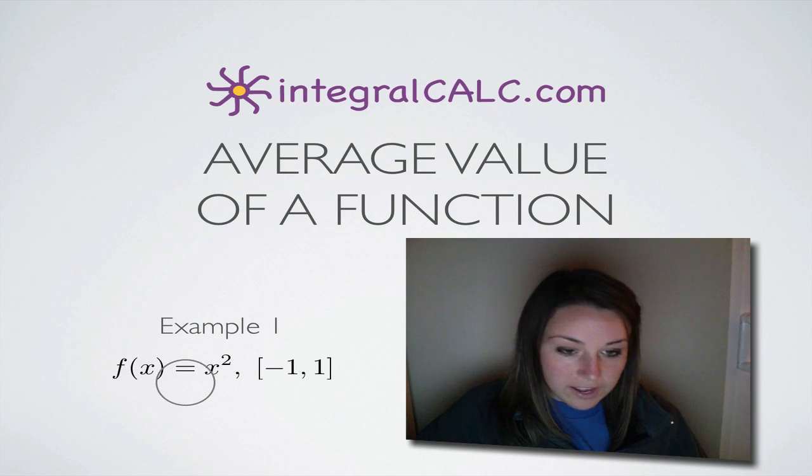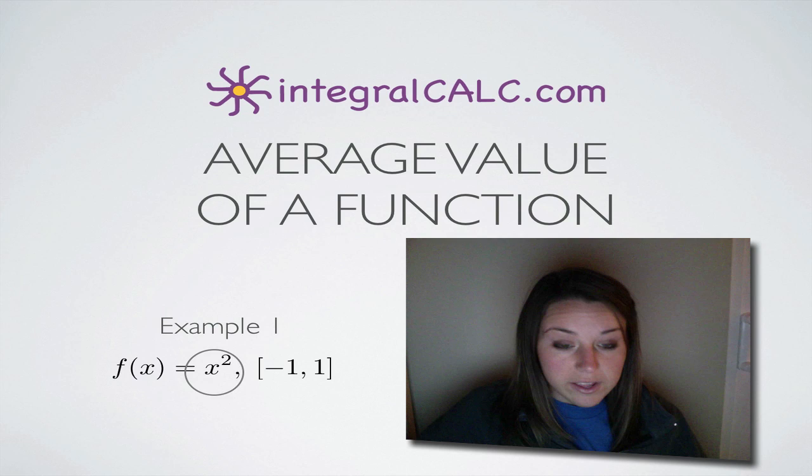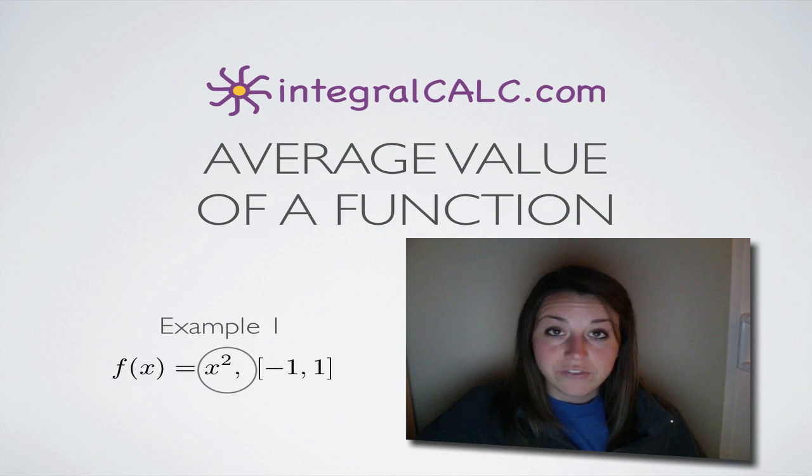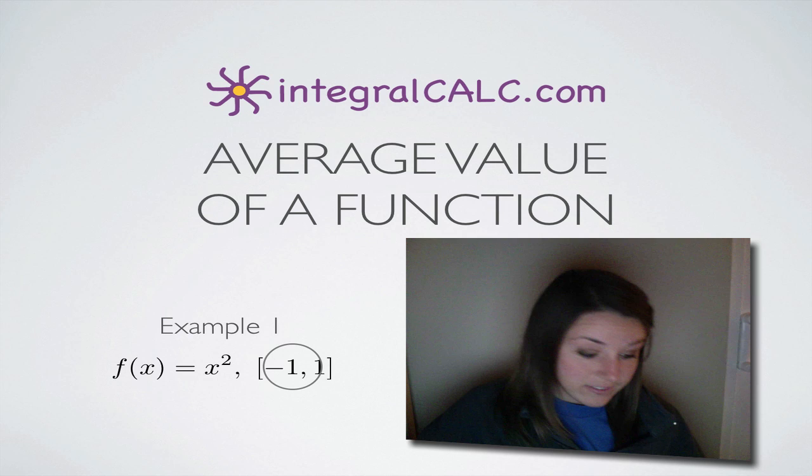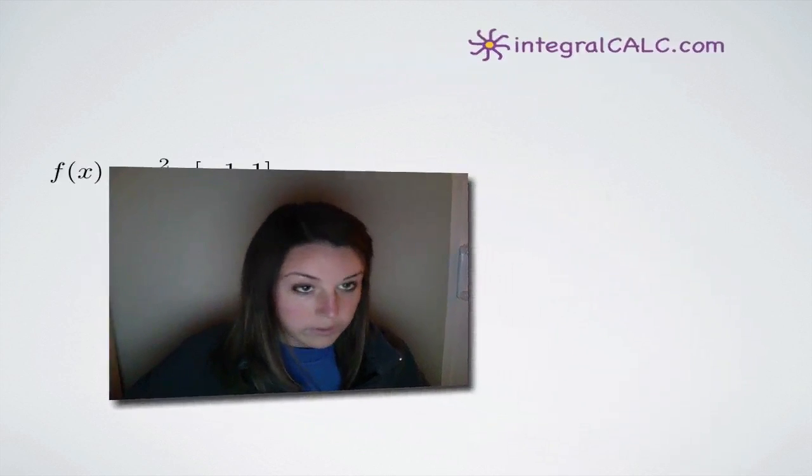The function that we're given this time is f of x equals x squared and we're asked to find the average value of that function between x equals negative 1 and x equals 1. So let's get to it.